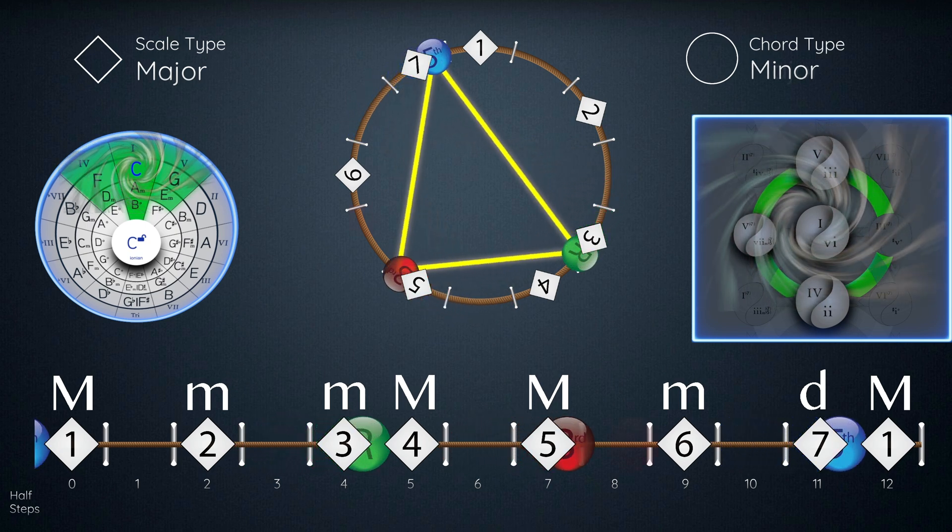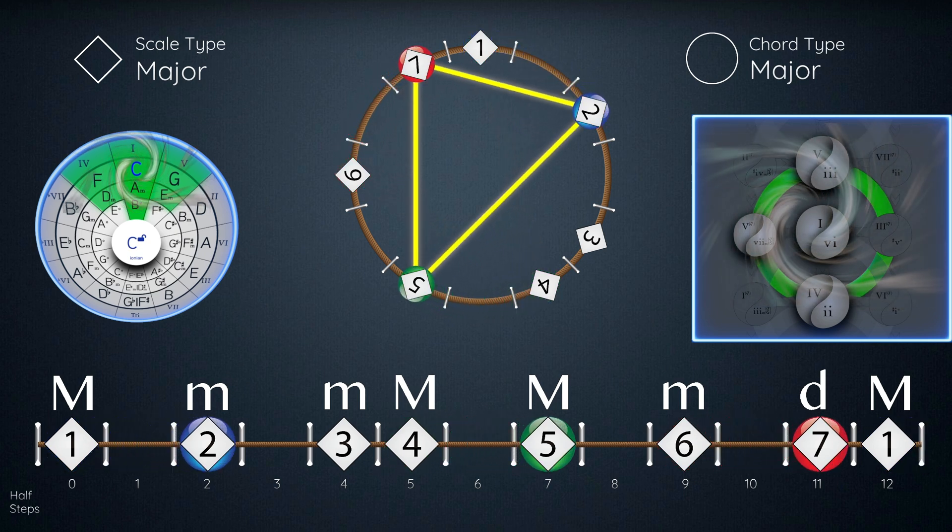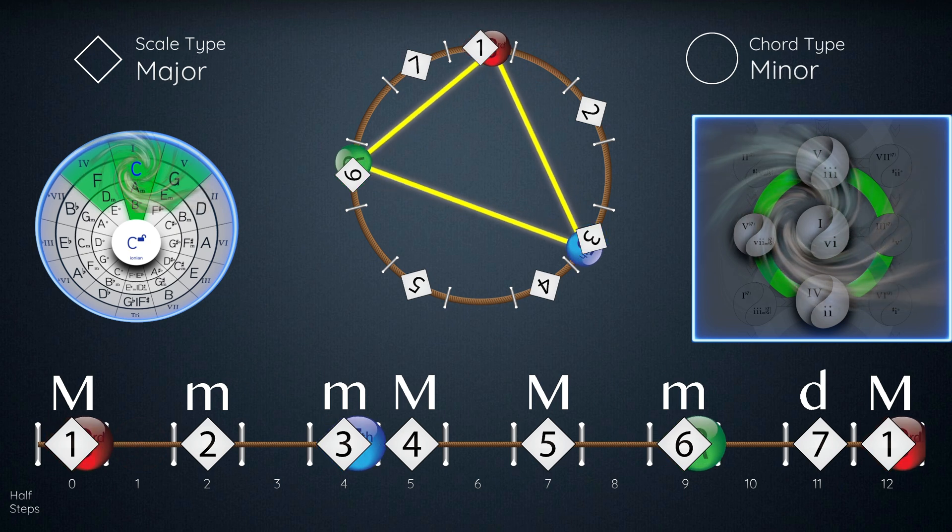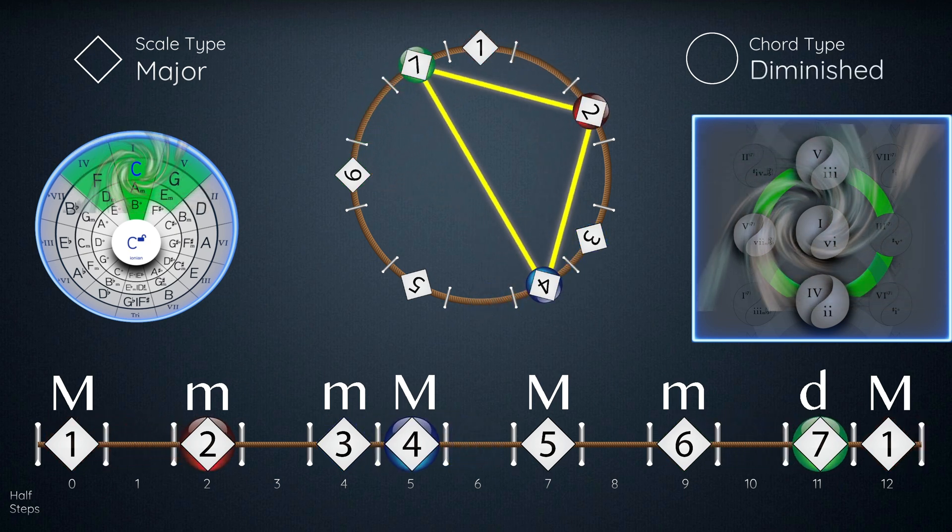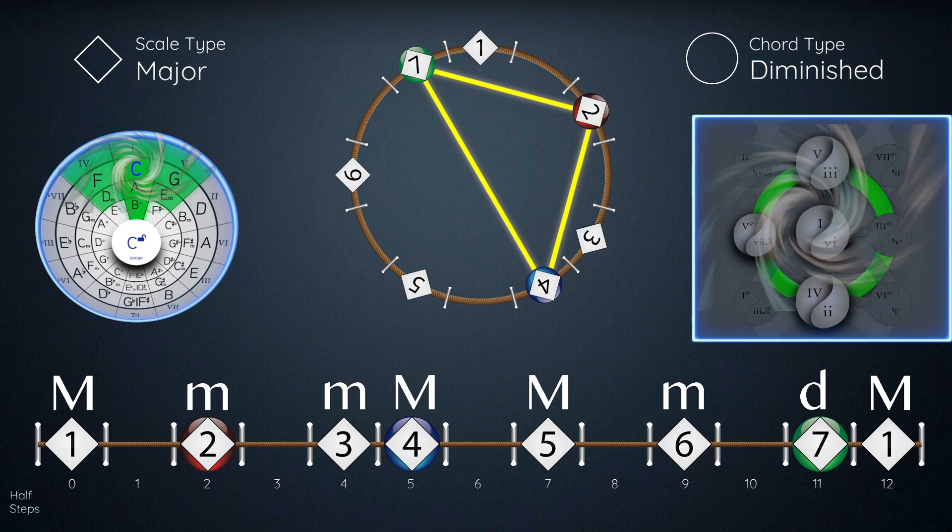Four is major. Five is major. Six, minor. Number seven, diminished. And so you don't have to remember how you really got it. You have to remember: major, minor, minor, major, major, minor, diminished.